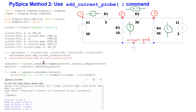This behaves as follows. Resistor R1 is connected between nodes 1 and 2. The resistance-plus-add-current-probe command will automatically add a zero-volt test voltage source in series with R1, with the positive terminal connected to the first node, which is node 1 in this case. Similarly, for the other resistors as shown here. Please pause the video now if you wish to study this in more detail.